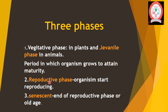The second phase is called the reproductive phase — when the organism starts reproducing sexually. The third phase is senescence, which marks the end of the reproductive phase and is also called old age.